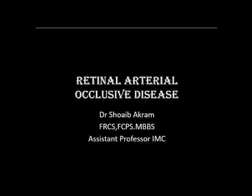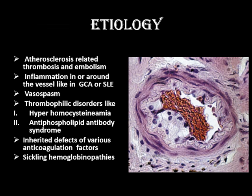As far as the etiology is concerned, the most important cause is atherosclerosis, thrombus formation and subsequent embolism. The other important cause is inflammation in or around the vessel, like in cases of giant cell arteritis and systemic lupus erythematosus. The third important cause is vasospasm that occurs in cases of retinal migraine. The fourth one is thrombophilic disorders like hyperhomocysteinemia and anti-phospholipid antibody syndrome.